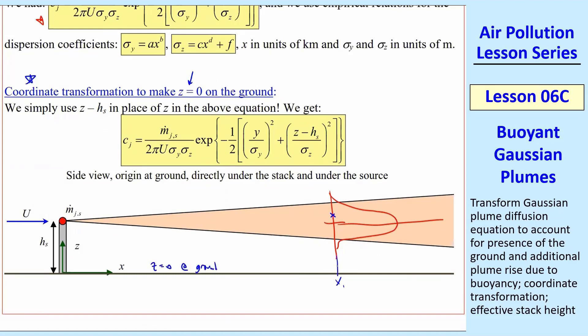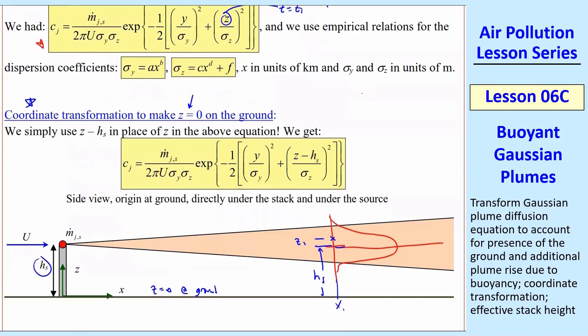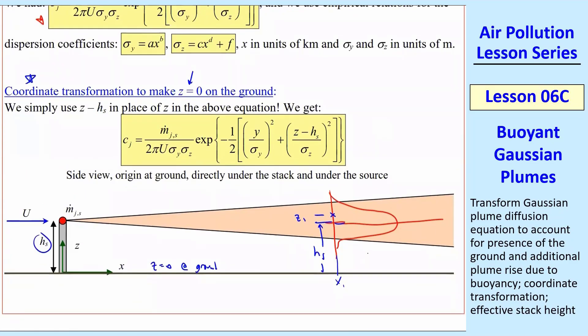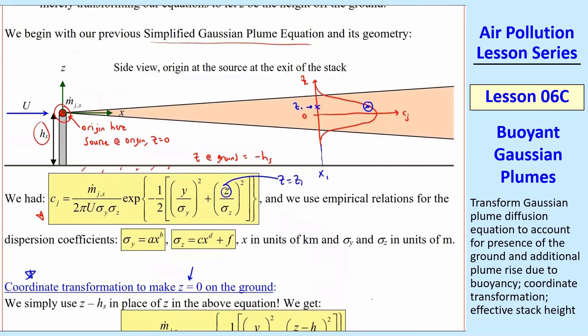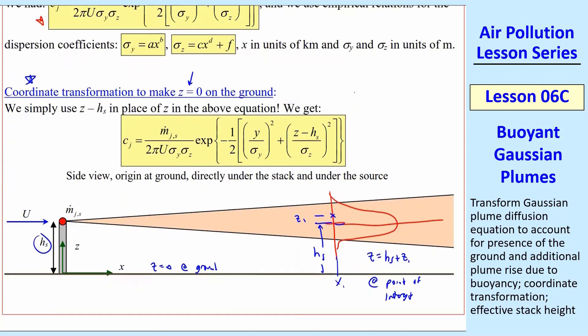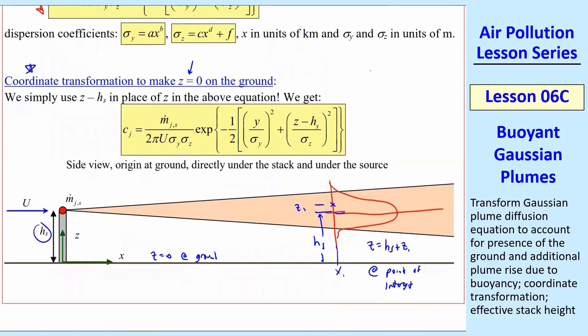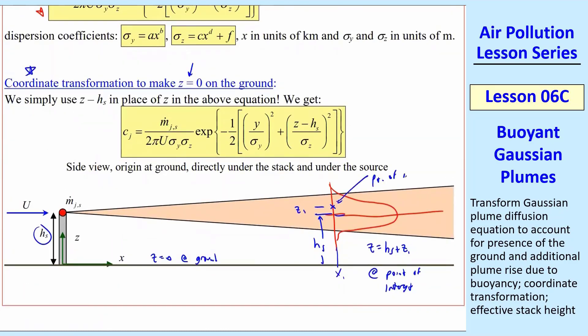Our point of interest here is that same point as we had up here. But we're moving our z to the 0 at the ground. At this x1, we go up to the center line of the plume, which is a height hs, that's the stack height, plus this z1 that we had before. So the actual total z is equal to hs plus z1 at the point of interest. Now, physically, these are exactly the same plumes. They're at the same location. This point of interest is the same as here. All we've done is we've moved the z-axis down to here. So this is now the origin, but the source is up here.